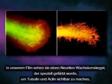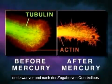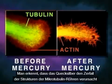Shown here is a neurite growth cone stained specifically for tubulin and actin, before and after mercury exposure. Note that the mercury has caused disintegration of the tubulin microtubule structure.